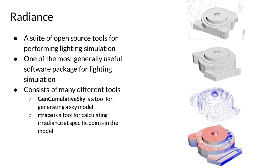Radiance is a suite of validated programs widely used for lighting simulation. Within this research, two specific programs were used: GenCumulativeSky and R-Trace. The GenCumulativeSky program generates a model of the sky, describing the cumulative irradiance distribution for a specified time period across the sky hemisphere. The R-Trace program computes radiance values at specific points within a model. However, R-Trace is designed for relatively small models; hence, we identified the need to design a workflow able to handle an input model consisting of millions of polygons.